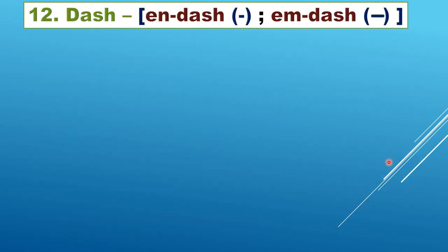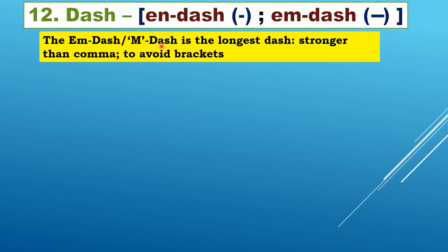Now let us see the dash. There are two types of dashes: the n-dash and the m-dash. The hyphen is the shortest, the n-dash is bigger than a hyphen, and the m-dash is the longest. The m-dash is used especially in long sentences where you need to separate something strongly — stronger than a comma and used to avoid brackets.